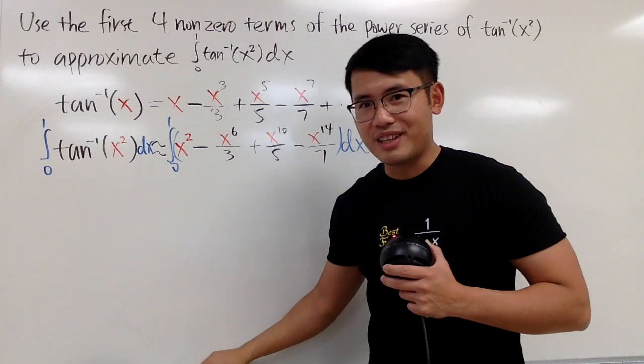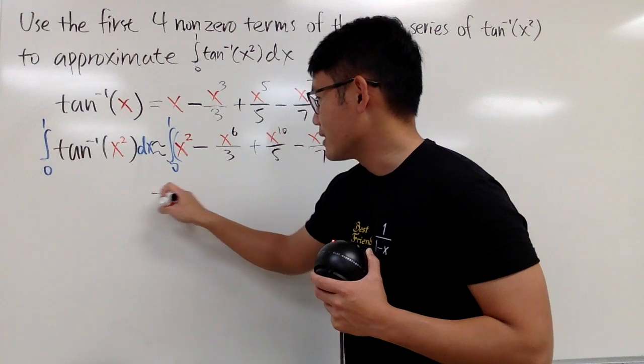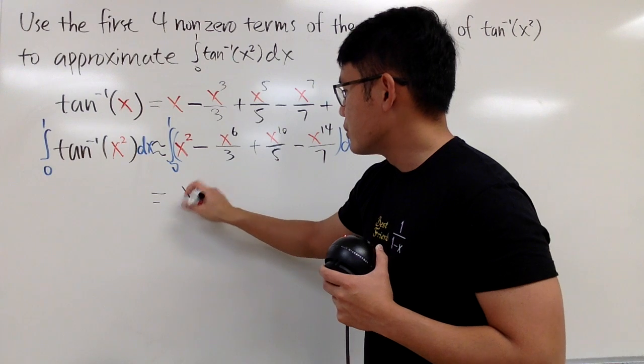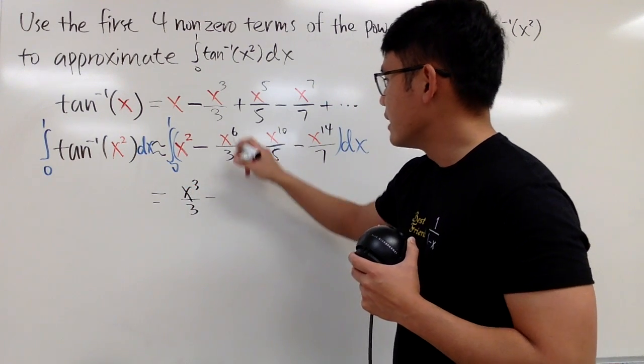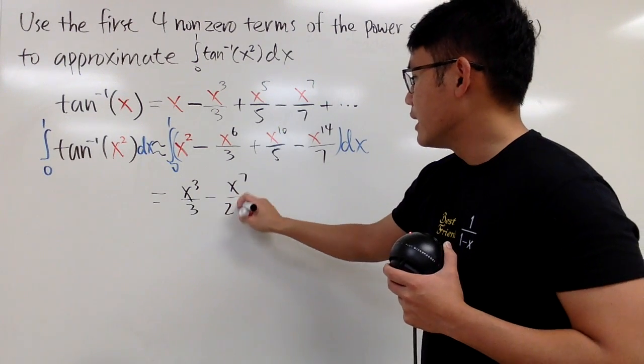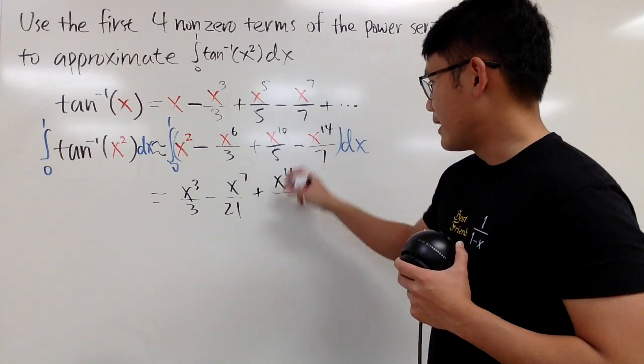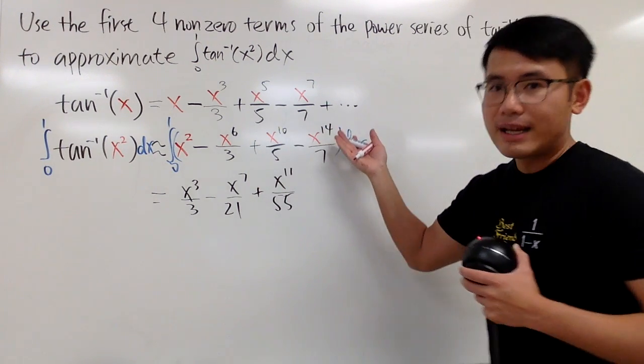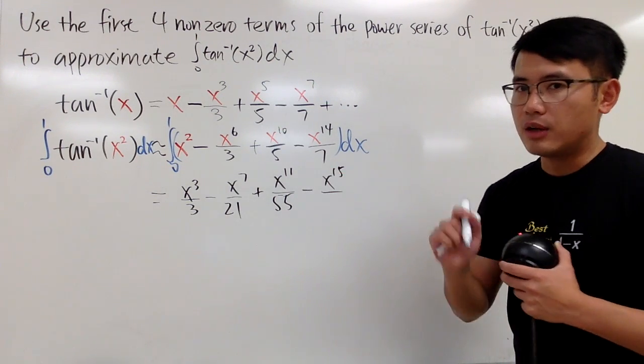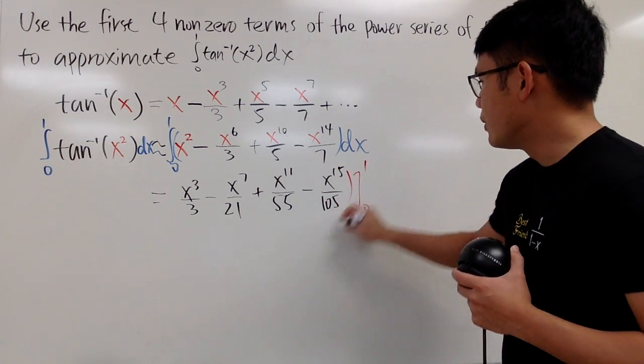So we can just continue from here. This is, well, I put on approximate already, so I'll put on equal next, because we'll say this is approximately equal to the following. Anyway, go ahead and integrate this, we get x to the 3rd power over 3, and then minus, you add 1 to this, which is x to the 7th power, divided by 7, you get 21, and then you add x to the, you add 1, which is 11, over, divided by 11, so you get 55, and then you add 1 to this, so that will be x to the 15th over, 7 times 15 is 105, so you put on 105 right here, and then you are going to plug in these little numbers.